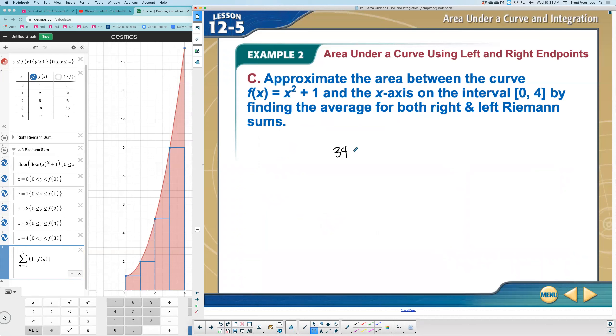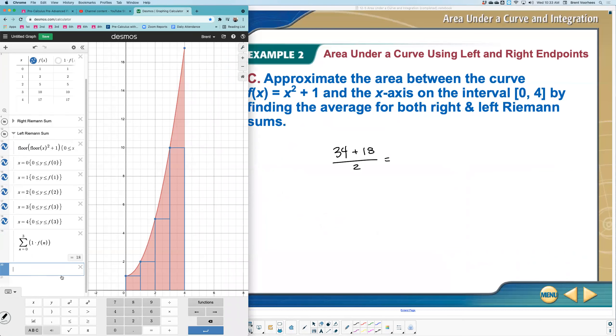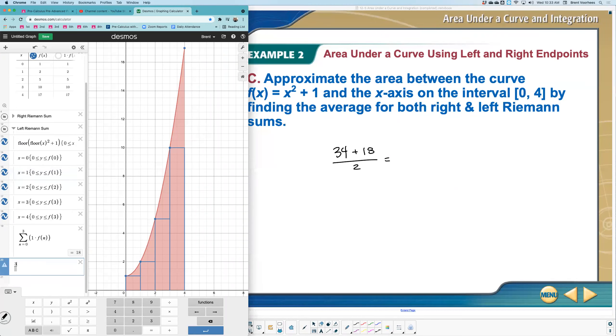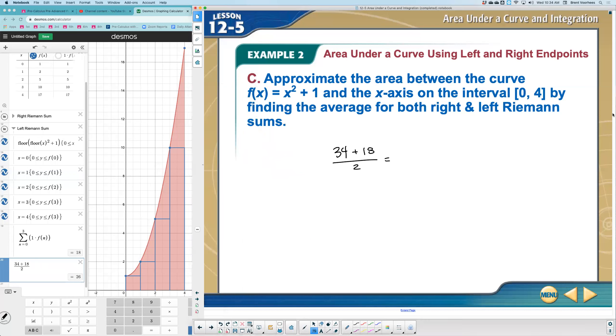So more accurate would be the average of the two together. If you take that 34 and you add it to 18 and divide by two, we get the average. This would be the average area. Let's just type this in the calculator. 34 plus 18 divided by two is 26. 26 units squared. Now this would be a better estimate.